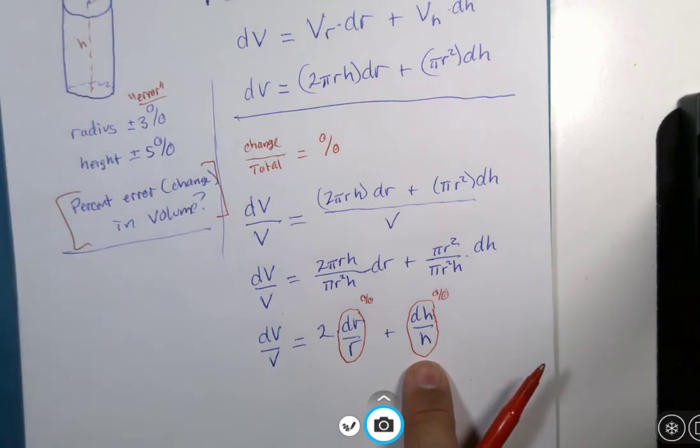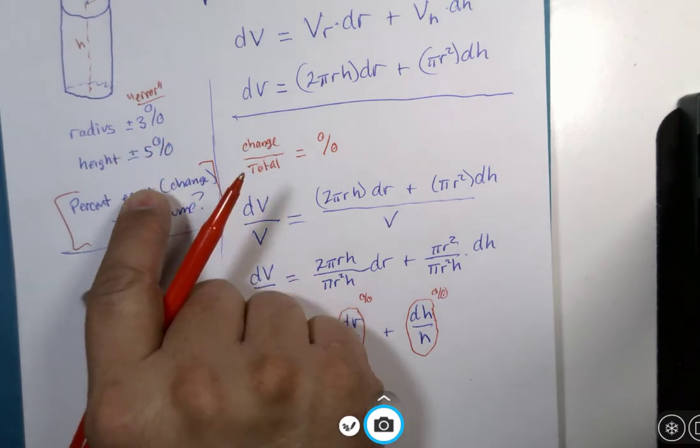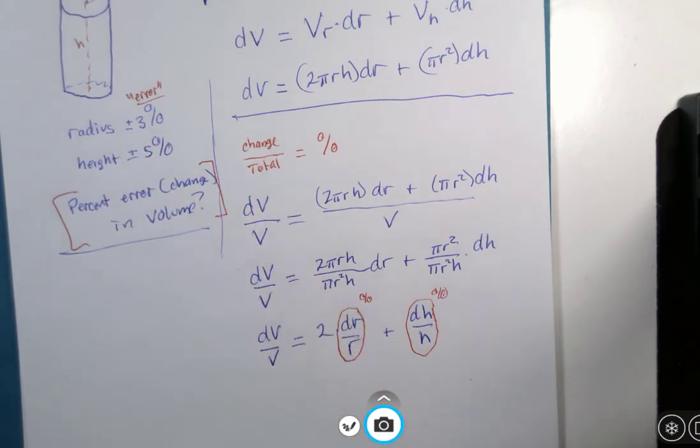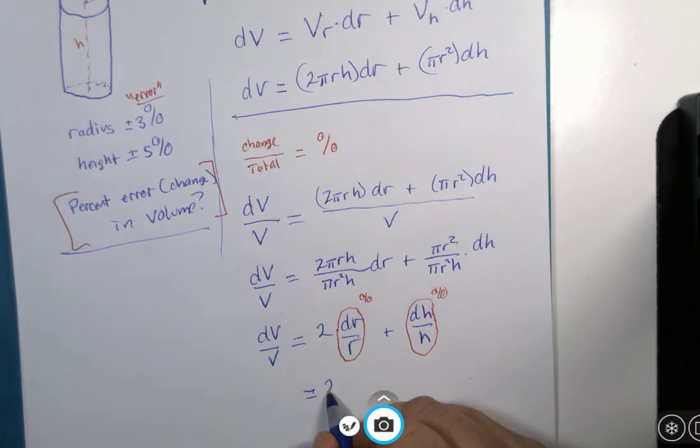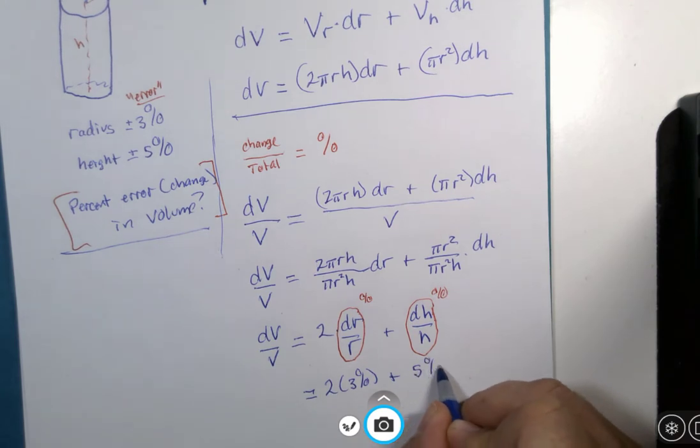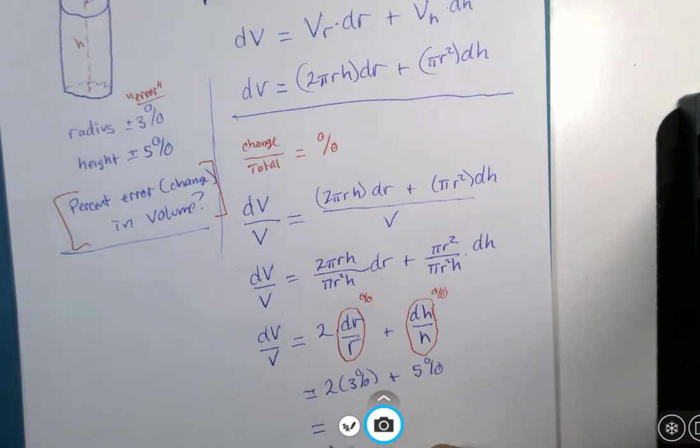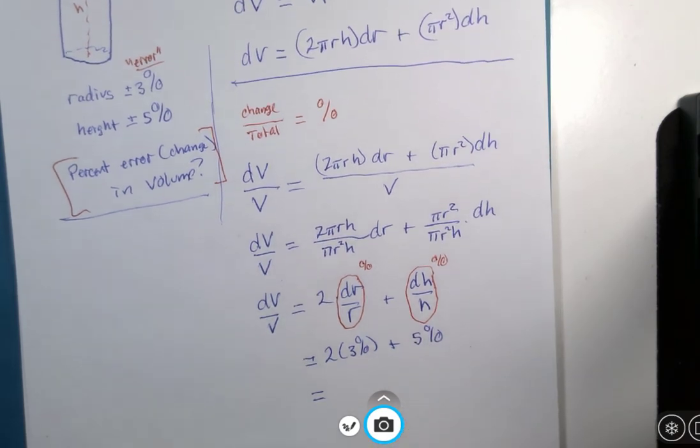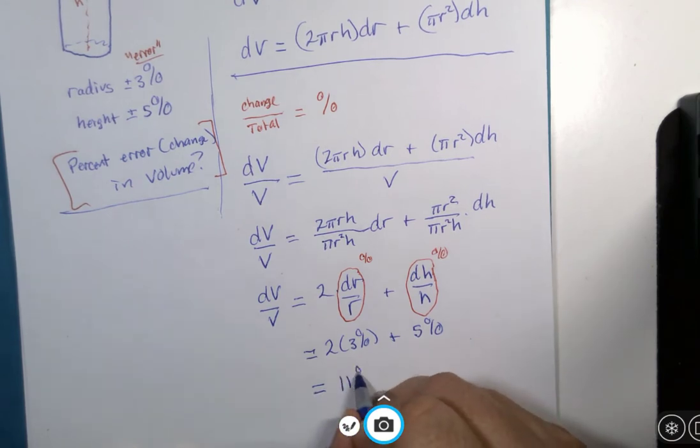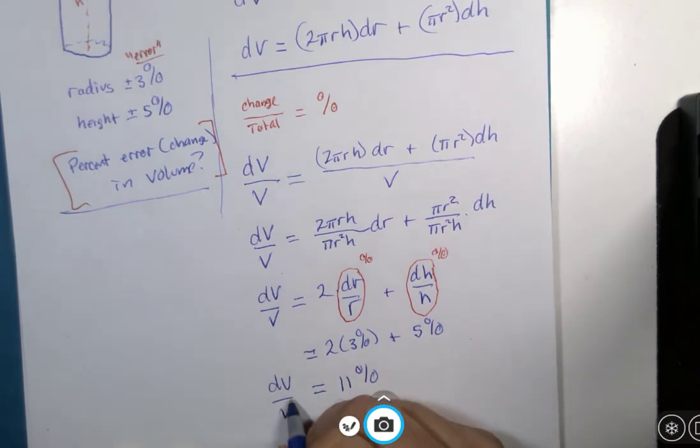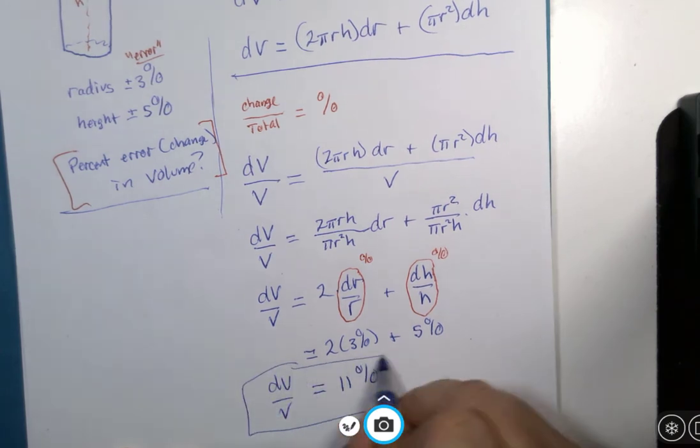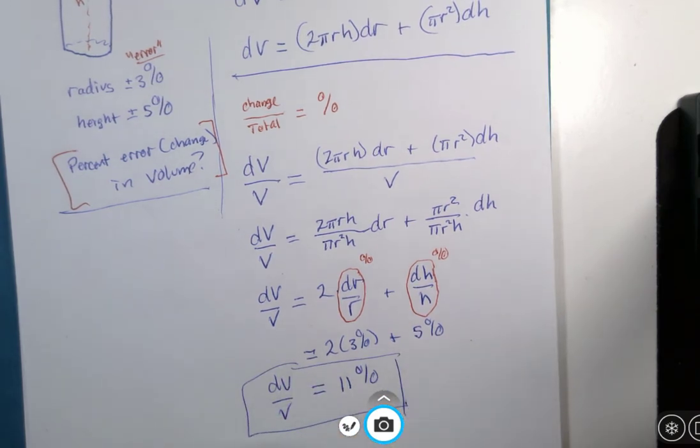And it just so happens that we were given those two percentages when the problem began. Again, this is 2 times 3% plus 5%. My students and my visitors, that gives us an 11% error in our volume.